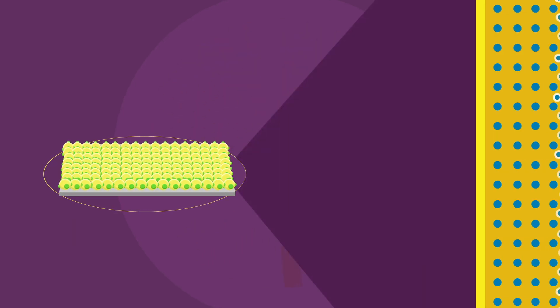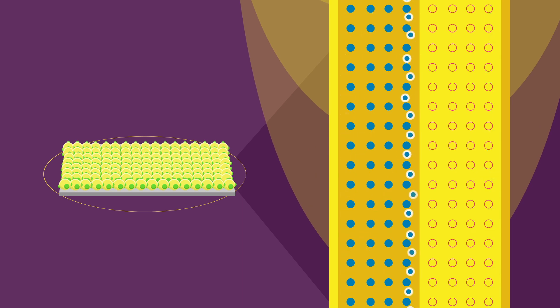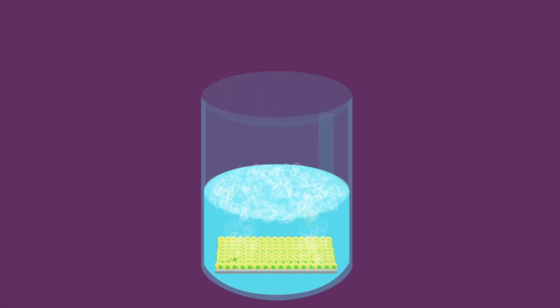Briefly, during water splitting, negatively charged electrons and positively charged holes are generated in the presence of sunlight and a photocatalyst.